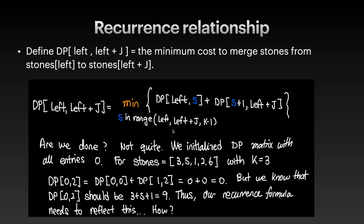We initialize our n-by-n DP matrix with all entries equal to zero. But there's a problem: for example, with stones = [3, 5, 1, 2, 6] and k equals three, dp[0][2] should equal three plus five plus one equals nine — but the recurrence as stated just gives zero plus zero equals zero. So the formula needs to be fixed to reflect this.